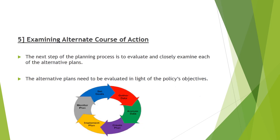The fifth step is examining the alternative courses of action. The next step of the planning process is to evaluate and closely examine each alternative plan. Each option will go through an examination where all pros and cons are weighed. The alternative plans need to be evaluated in the light of policy objectives. For example, if it is a financial plan, its risk-return evaluation will be done. Detailed calculations and analyses are conducted to ensure the plan can achieve the objective in the most effective manner possible.